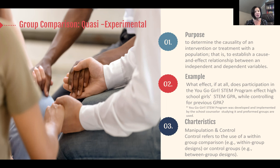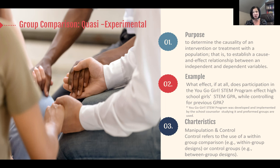Control can be a within comparison group, in which the scholar looks at one group over a period of time, or it can be a between group in which a control or comparison group is used. An example question with this type of design may be: what effect, if at all, does participation in the You Go Girl STEM program affect high school girls' STEM GPA while controlling for previous STEM GPA?